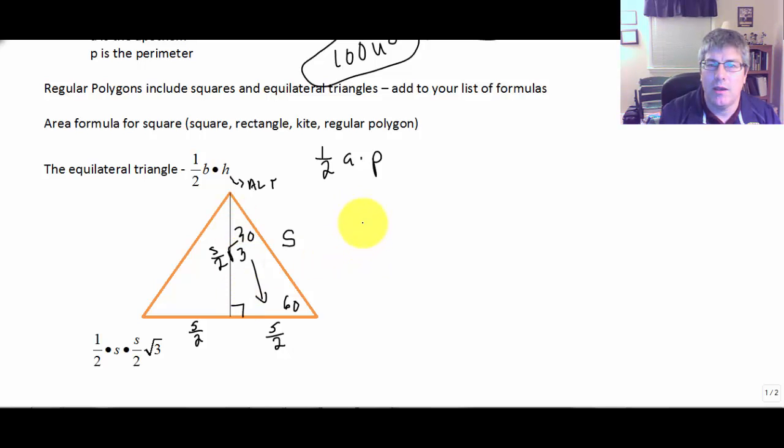So if I were doing 1/2 base times height, that would be my area of a triangle. So I have that written down here. The area is 1/2 base S times my height, S over 2 times square root of 3.